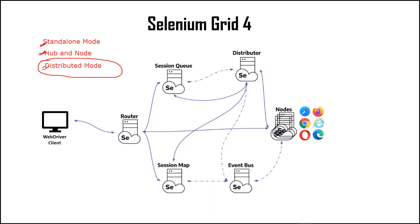Now let's start with the third mode, which is distributed mode, and how we can set up the grid in this mode. In distributed mode we start each component of the grid separately on different machines. So we need to set up all these components separately — one machine as router, another as session queue, then distributor on a third machine, another will have a session map, the event bus will be running on a different machine, and at last we'll start the nodes on other machines.